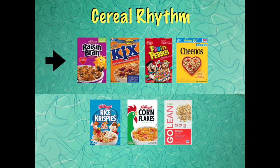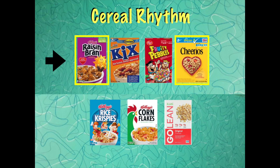Take a look at my top row of cereals. Can you be my echo? Raisin Bran, Kix, Fruity Pebbles, Cheerios. Can you figure out which box of cereal has the same rhythm as Raisin Bran? Is it Kix, Fruity Pebbles, or Cheerios? Well, if you said Cheerios, you are right. They both have a do-de-do rhythm.